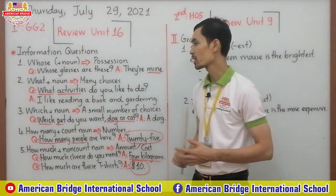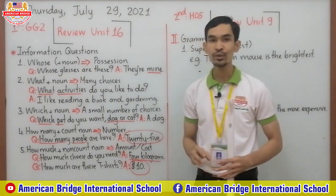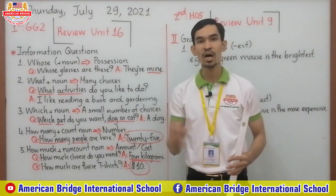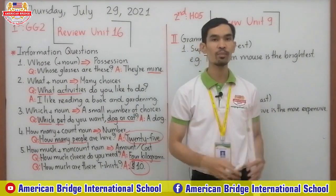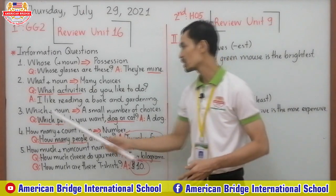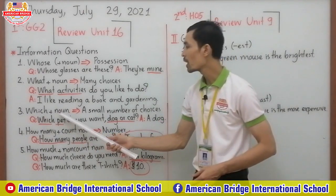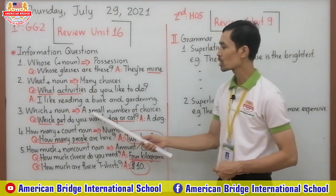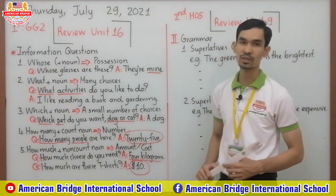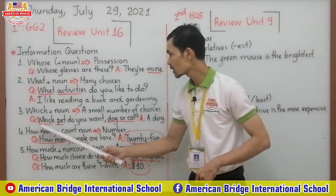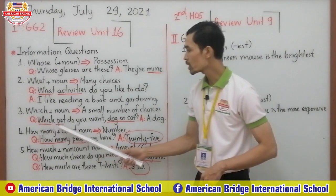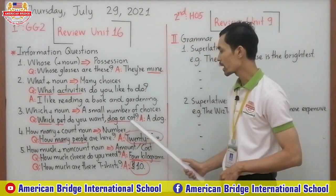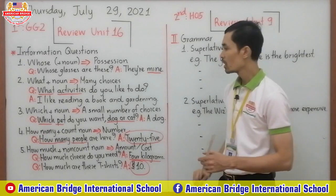When you want to ask about a small number of choices, you use which plus noun. For example: 'Which pet do you want — dog or cat?' 'A dog.' You can see 'which pet' — 'pet' is the noun, and there are only two choices.